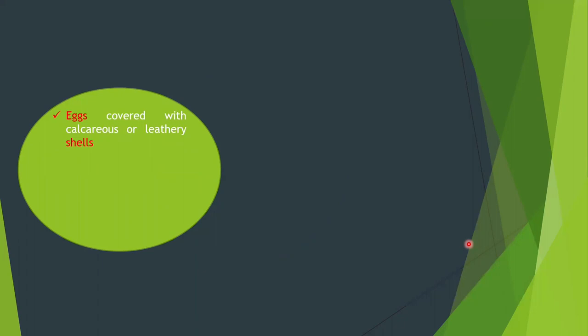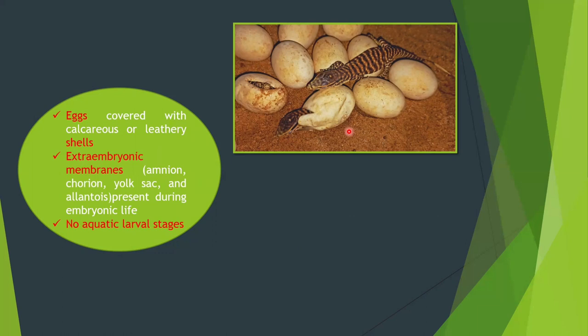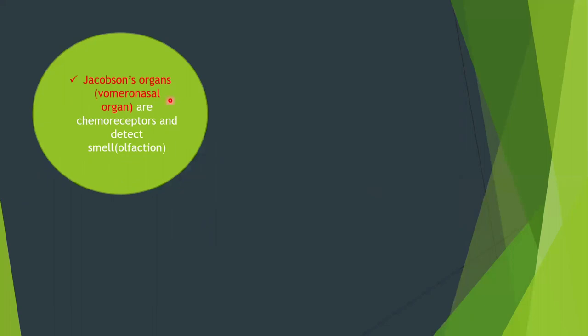Eggs are covered with calcareous or leathery shells. Extra-embryonic membranes — present outside the embryo — include the amnion, chorion, yolk sac, and allantois. Reptiles have no larval stages, unlike amphibians. The amniotic sac contains amniotic fluid; other membranes include the chorion, allantois, yolk sac, yolk, and albumin.